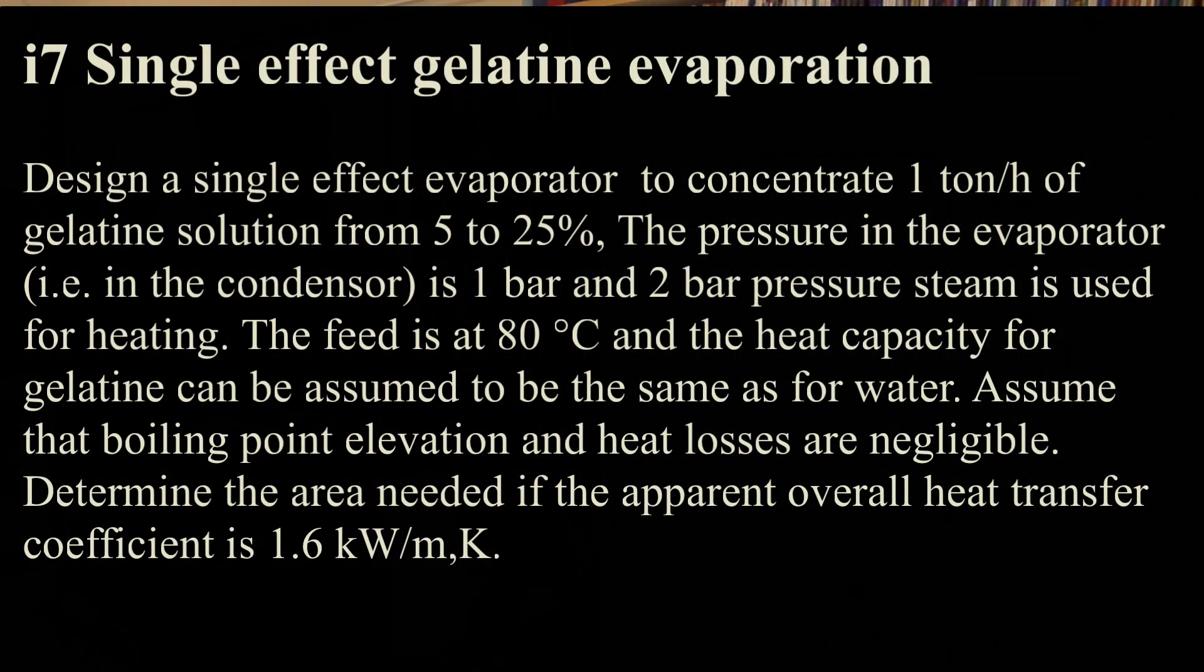Design a single-effect evaporator to concentrate one ton per hour of gelatine solution from 5% to 25%. The pressure in the evaporator, that is in the condenser, is 1 bar and 2 bar pressure steam is used for heating.